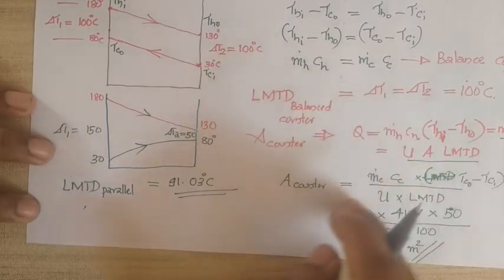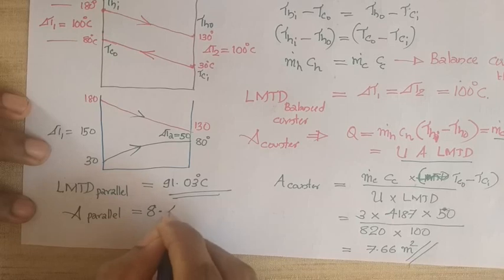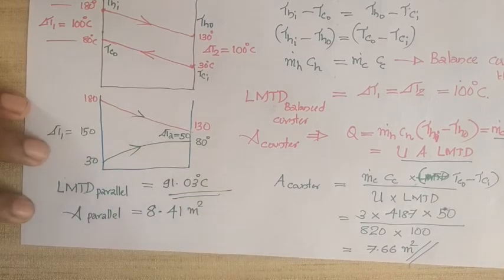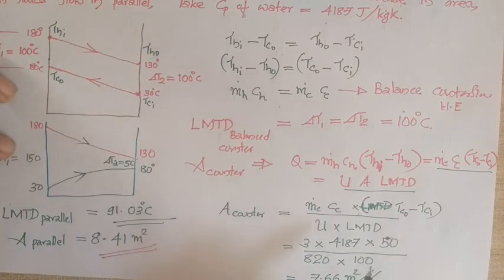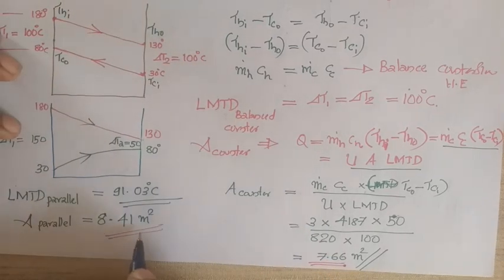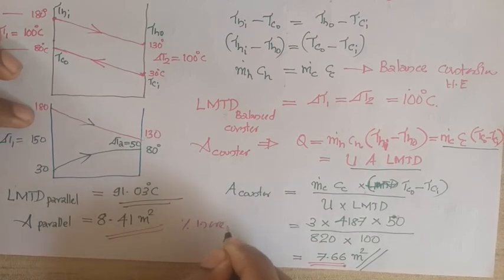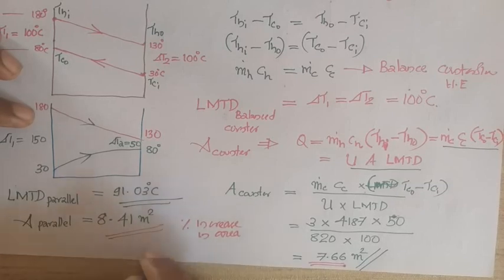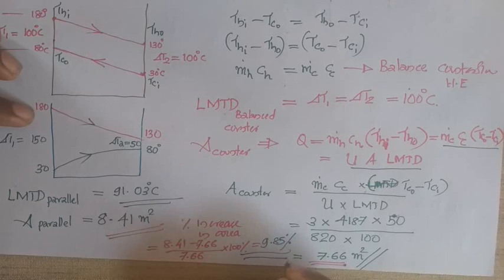Using the same expression for area with LMTD = 91.03°C, the required area for the parallel flow heat exchanger is 8.41 m². The increase in area is (8.41 − 7.66) / 7.66 × 100 ≈ 9.85%. So a parallel flow arrangement requires approximately 9.85% more heat transfer area compared to the balanced counter flow configuration.